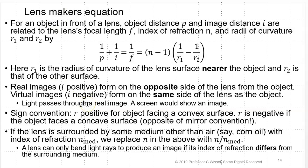There is something called the lens maker equation. For an object in front of a lens, the object distance P and image distance I are related to the focal length, the index of refraction N, and the radii of curvature R1 and R2 of both sides of the lens: 1 over P plus 1 over I equals 1 over F, and that equals N minus 1 times the quantity 1 over R1 minus 1 over R2. R1 is the radius of curvature of the surface nearer the object; R2 is the one further away. Real images (I positive) form on the opposite side of the lens from the object. Virtual images (I negative) form on the same side.